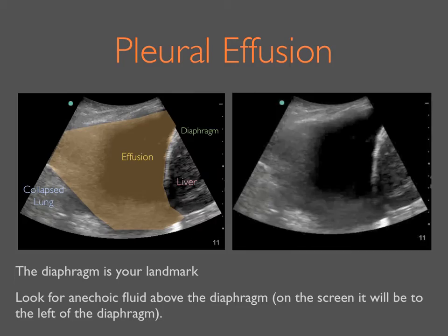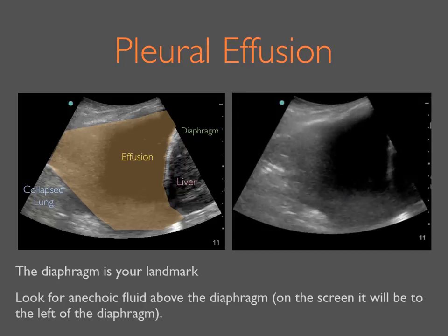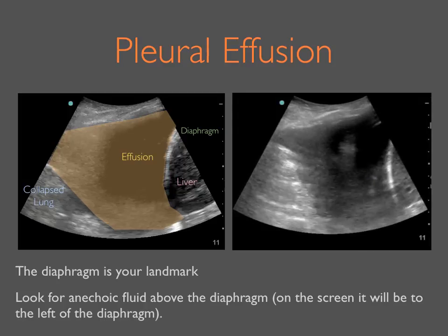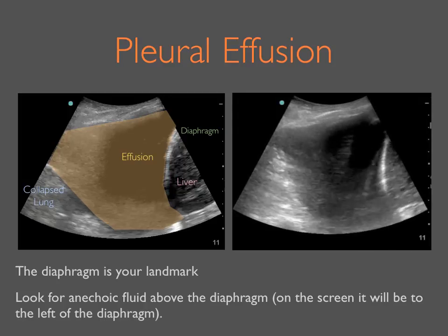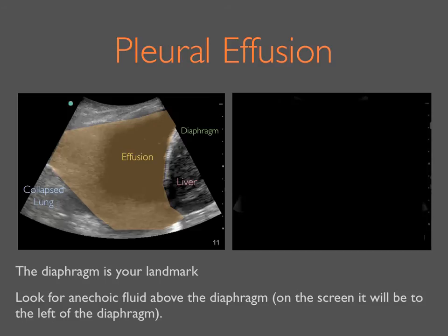If an effusion is present, you will see anechoic fluid surrounding the base of the partially or collapsed lung and outlining the bright white diaphragm. Here we see the curved hyperechoic diaphragm with a large thoracic effusion and collapsed lung visible on the left side of the image.